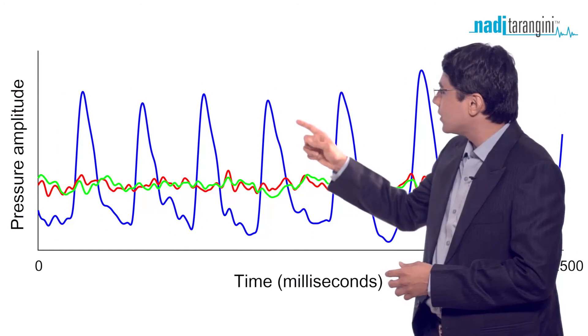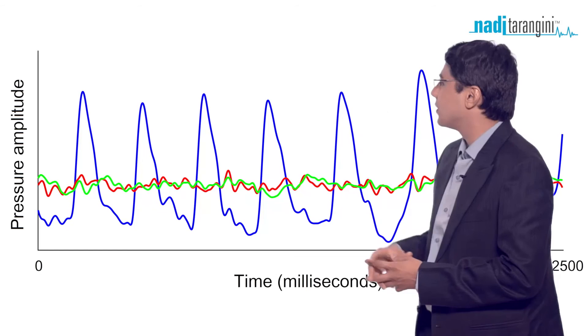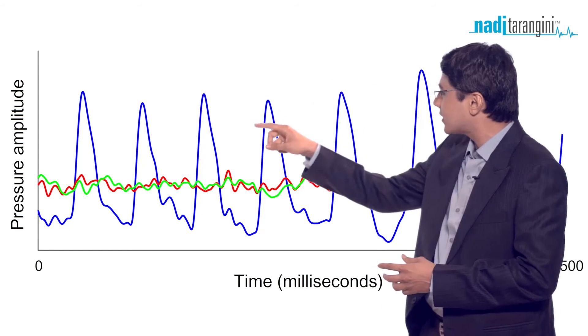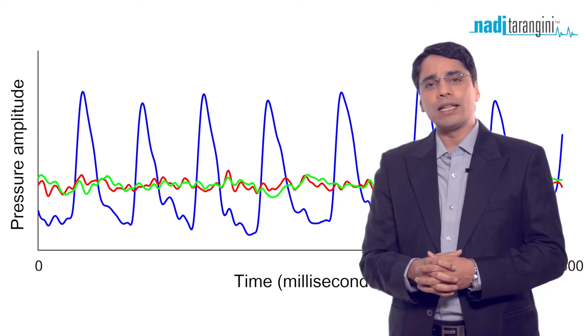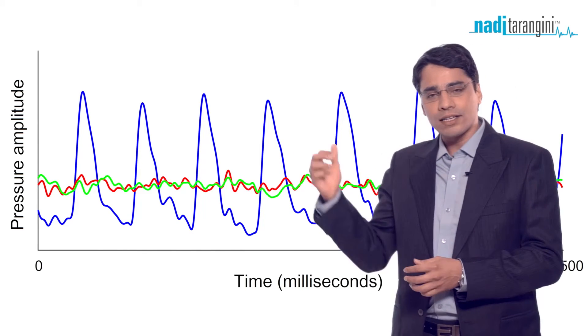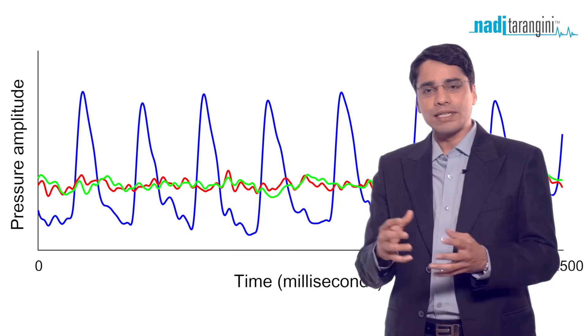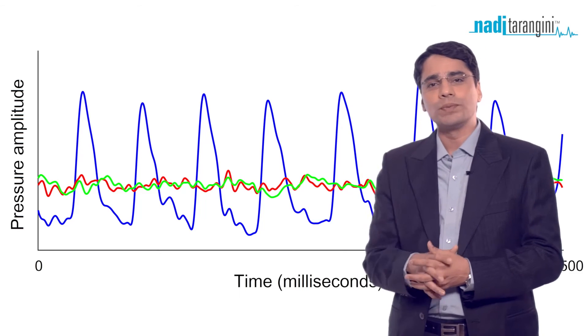In this final example, only the blue line is heavy and the other two lines are almost flat. This means that at this moment of capture, the Vata dosha was very strong and the other doshas were either negligible or had a very sukshma (subtle) nature.